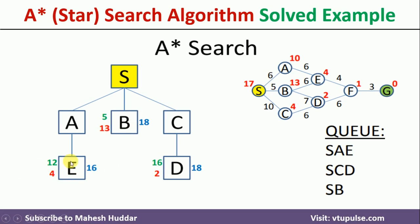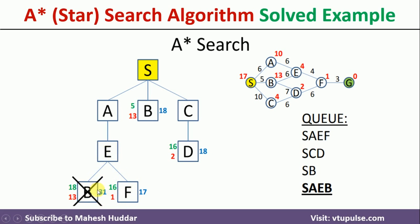Since S→A→E is the smallest, we explore E. From E, we can go to B or F. Going to B: 6 + 6 + 6 = 18, plus heuristic of B (13) = 31. Going to F: 6 + 6 + 4 = 16, plus cost to F (4) gives 16 + 1 = 17. Since 31 is quite high and we've reached F at minimum cost, we ignore B. The remaining options are S→A→E→F at 17, and two paths at 18.